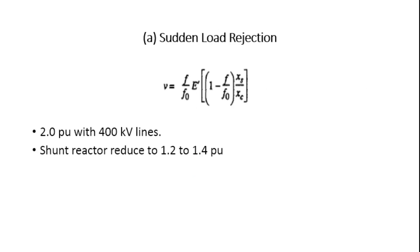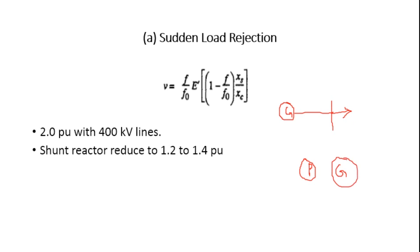Let us understand each cause one by one, starting with sudden load rejection. Consider a generator which is connected to a transmission line with some load connected to it. Whenever there is a sudden load rejection on the power system, the generator is coupled with the prime mover, and there is an inter-coupling between the two.